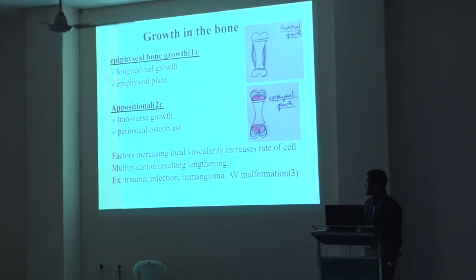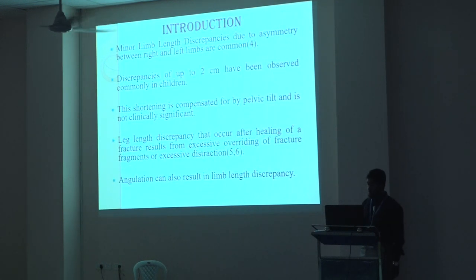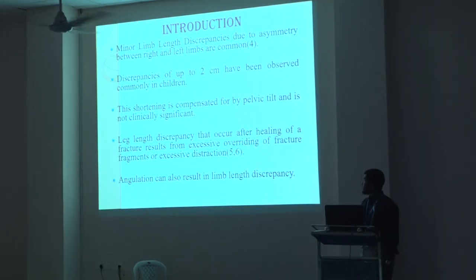Increased local vascular supply increases the rate of cell multiplication, resulting in lengthening, even following trauma, infection, hematoma, and periosteal elevation. Mild limb length discrepancy due to differences between right and left limb length is common.